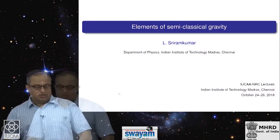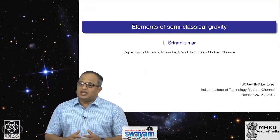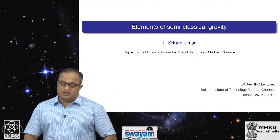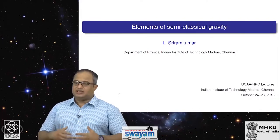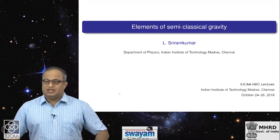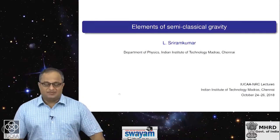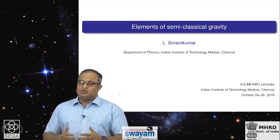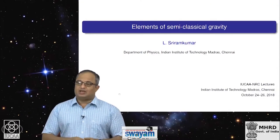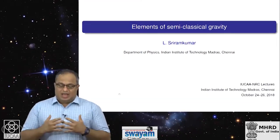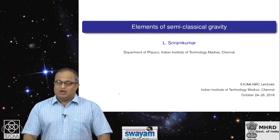In this set of three lectures, I introduce you to certain elements of semi-classical gravity, which essentially corresponds to the study of the behavior of quantum fields in a gravitational background. The background is fixed and you are interested in studying some properties of quantum fields in this given background. There are many interesting phenomena that occur in gravitational backgrounds, and importantly there is some similarity to what happens in gravitational backgrounds and the study of quantum fields in classical electromagnetic backgrounds.